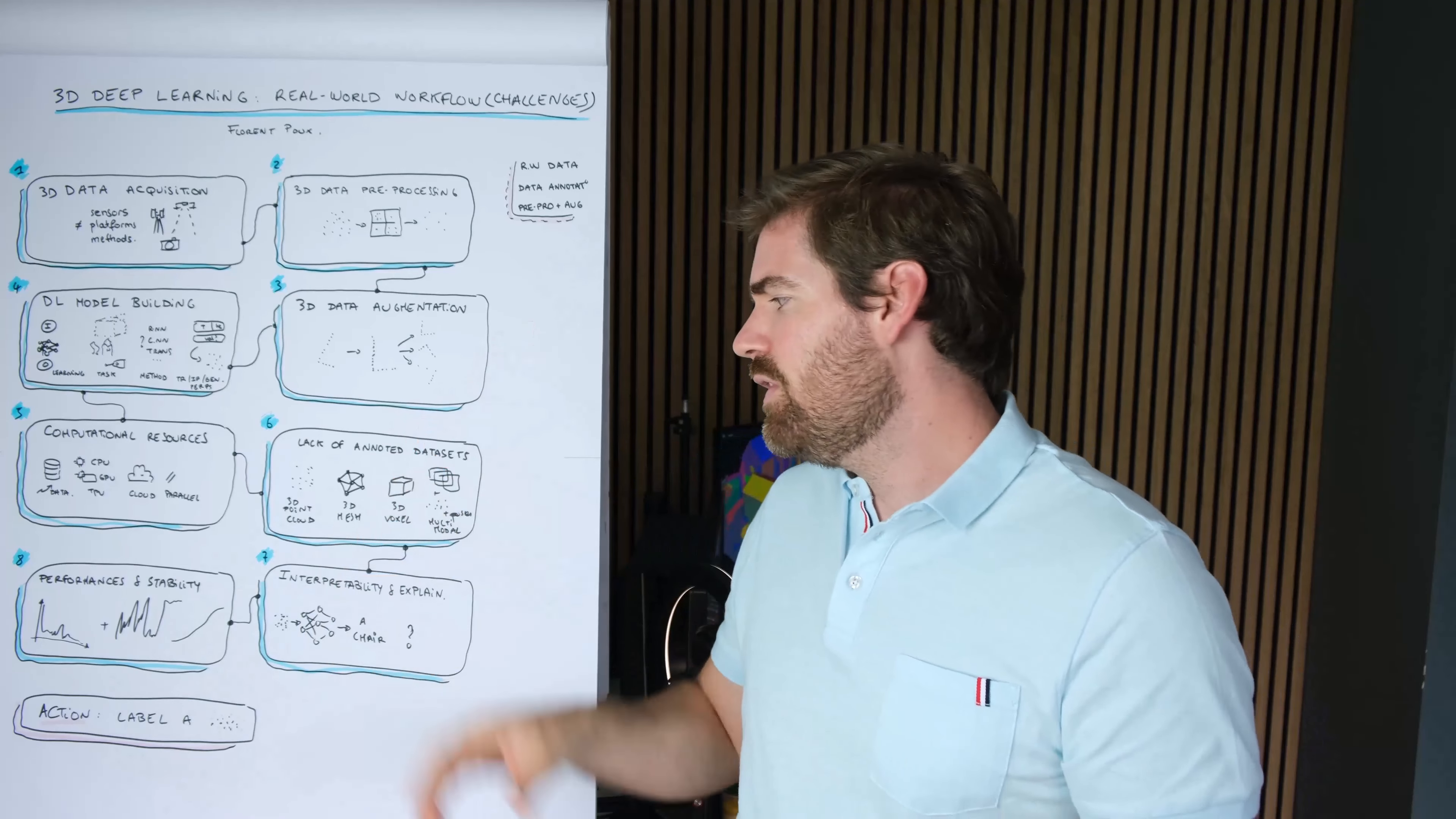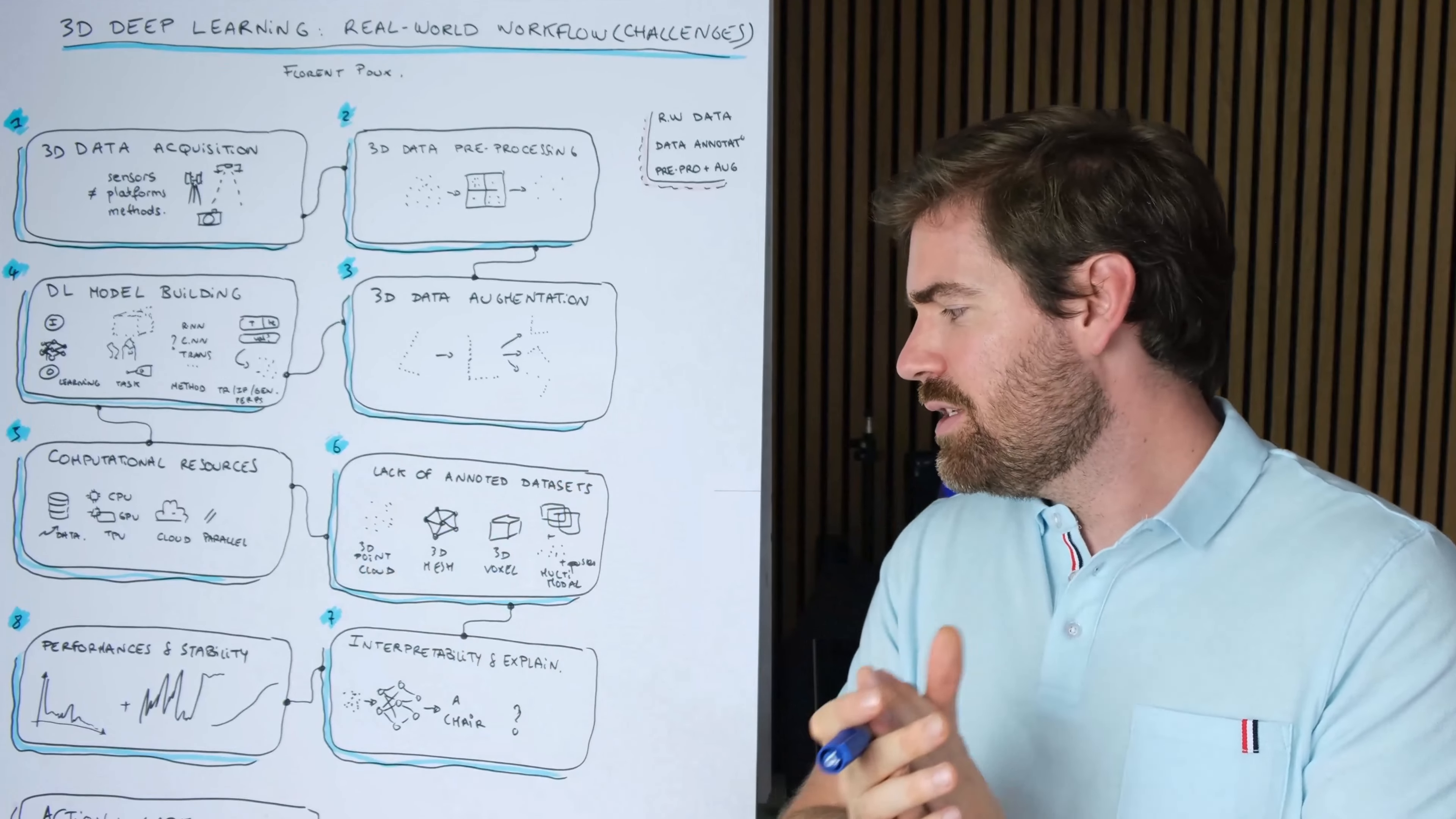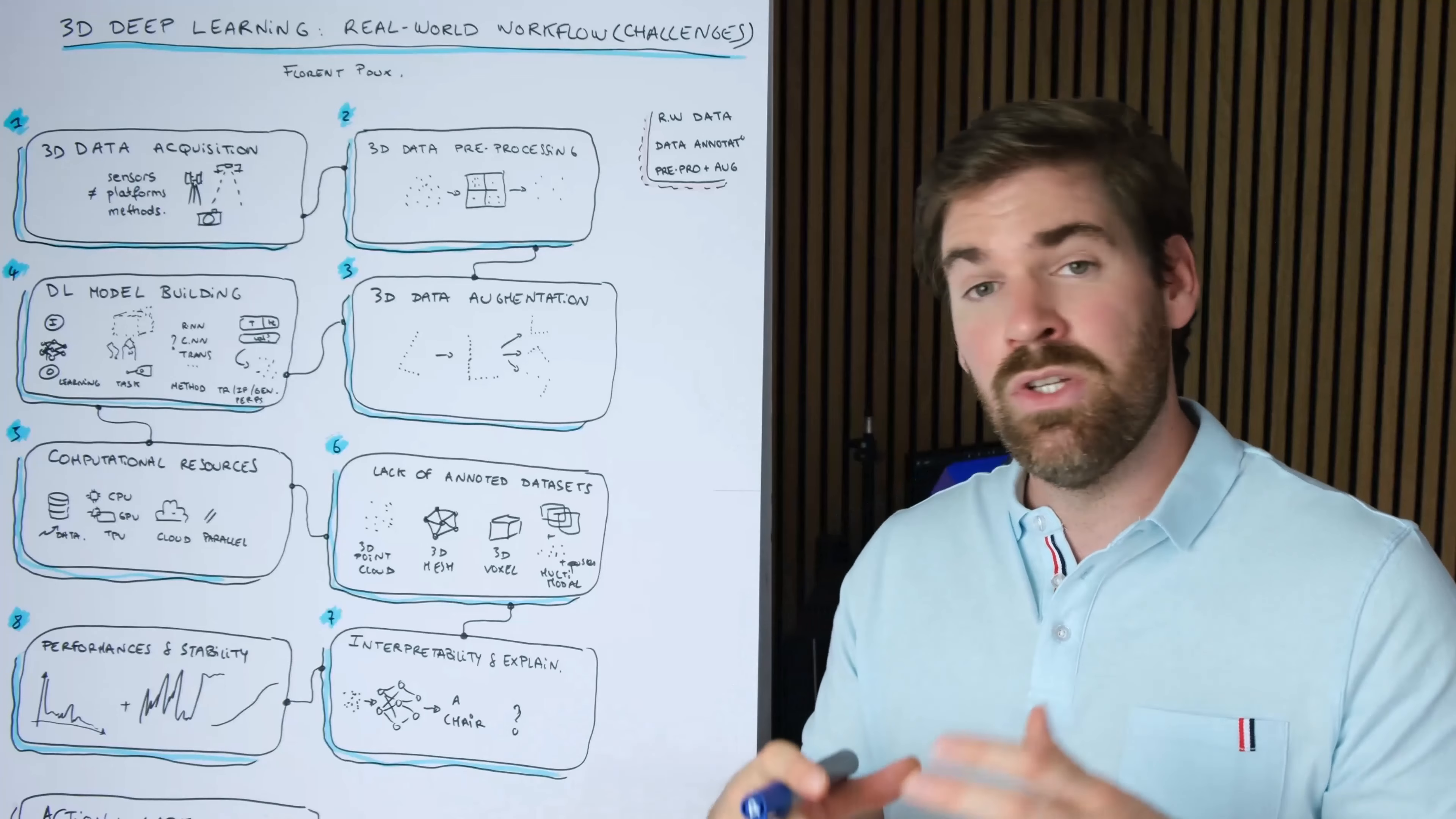The seventh challenge is interpretability and explainability. Here there are several layers and the model will make a lot of complex computations to find the optimal parameters for performing a specific task. Which means that it's usually with this kind of models pretty hard to understand exactly the rules or the logics behind how the models work. There is some work in deep learning explainability, explainability AI, which is very interesting.